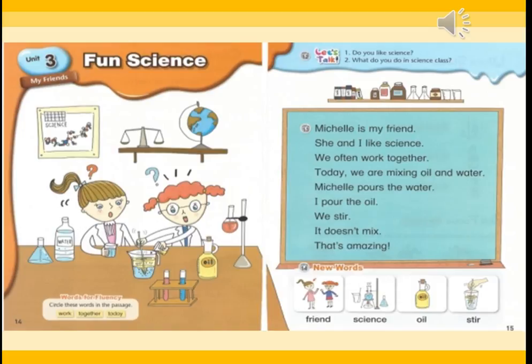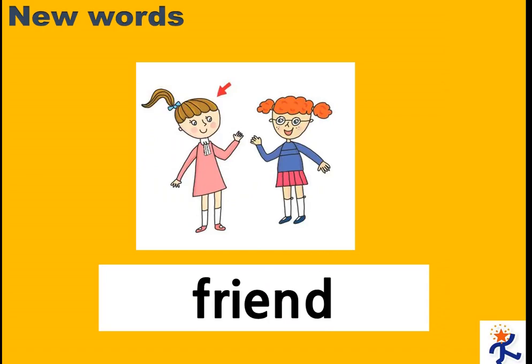Now it's time for the new word. Look at the picture. Friend. F하고 R 한 번에 발음해야 되고요. Spelling: F-R-I-E-N-D. I는 소리가 나지 않습니다. 스펠링 체크도 한 번 할까요? F-R-I-E-N-D.